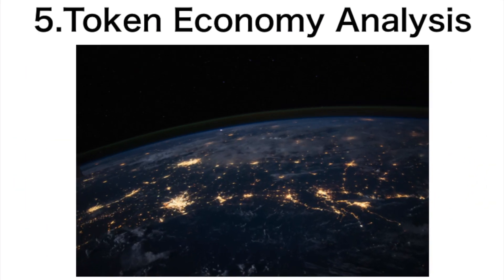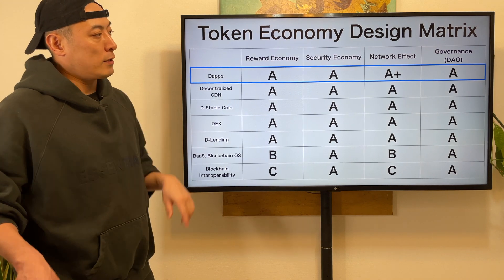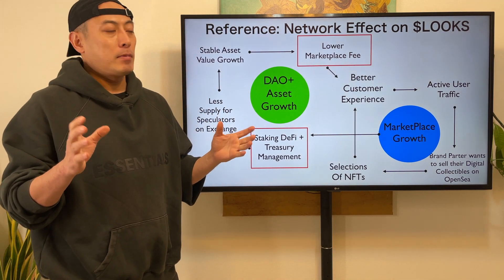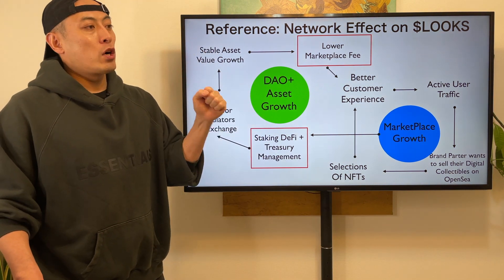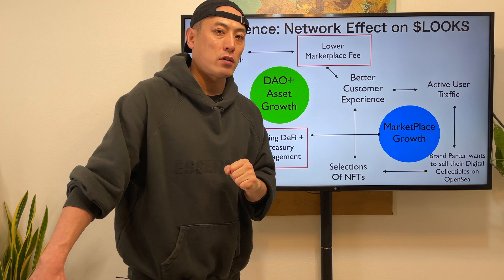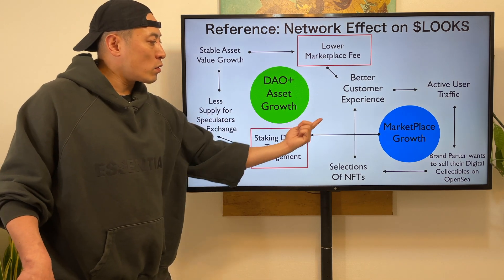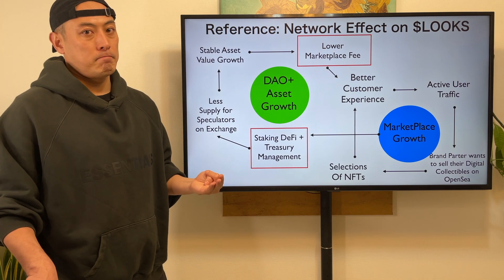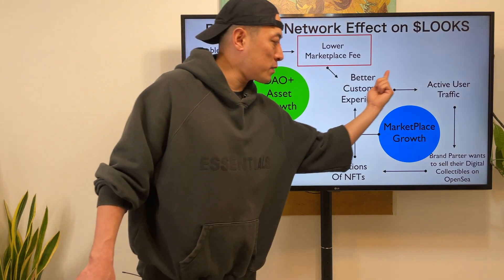Then number five: token economy analysis. Here's my token economy design matrix and the major matching category for Lens Protocol. Of course, they have not issued their token yet, so we cannot fully analyze their token economy - especially about network effects. For reference, I'm going to look at LooksRare and their token. Why? Simply because LooksRare is doing quite well competing with OpenSea based on their token economy. OpenSea cannot issue their tokens, but LooksRare can manage their tokens. The LooksRare team is leveraging their growth engine, mainly through DeFi liquidity mining solutions and incentive programs using their token itself.